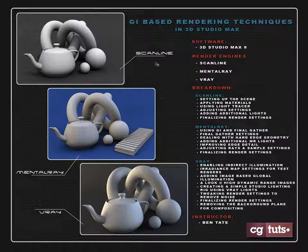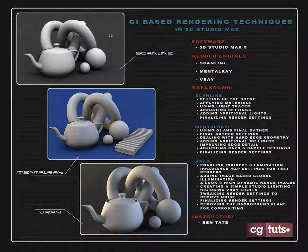We'll start out with the basic scanline inside of Max and look at setting up the scene, applying some shaders to the objects so that you'll get a good smooth render. We'll also look at how to do GI inside the scanline render using something called light tracer, as well as adjusting settings, adding an additional light into the scene so we get some directional shadows, and finalizing render settings to get a smooth and accurate result at the end.